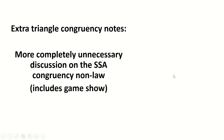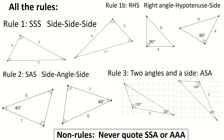Okay, so further completely unnecessary discussion on triangle congruency laws, in particular the SSA law, or the non-law, I should say. I'm also going to include a game show at the end. So here are all our triangle congruency laws that we learn at GCSE: SSS, SAS, and so on, and then you're taught not to quote SSA or AAA. Now, it's this one that I'm going to be talking about particularly in this video.